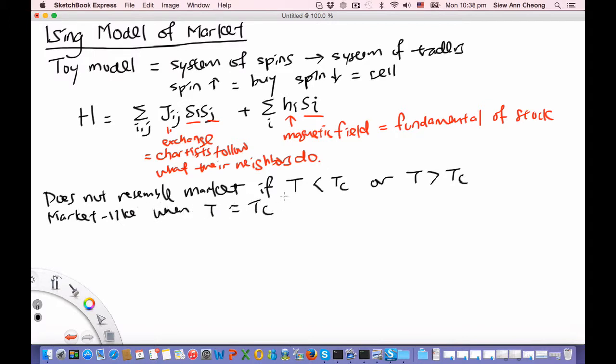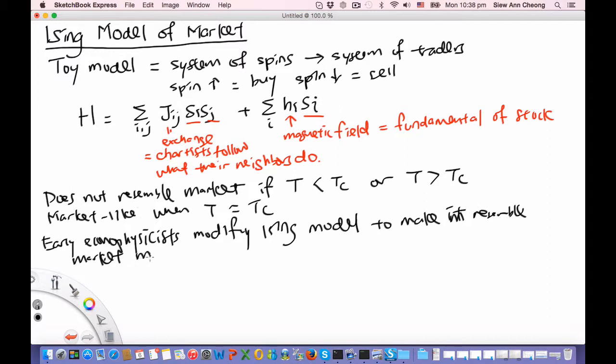This model is really only market-like when the temperature of the model is approximately the critical temperature of the model. Early econophysicists modified this Ising model to make it resemble the market more by separating the traders into two types: fundamental traders and noise traders.